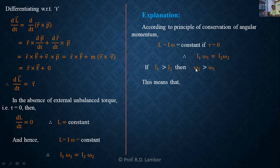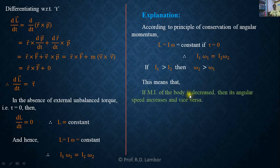And if the angular speed increases — conversely, if the moment of inertia of the body increases, meaning I₁ is less than I₂, then ω₂ will be less than ω₁. So if the moment of inertia of the body increases, its angular speed decreases. And vice versa — if moment of inertia decreases, angular speed increases.